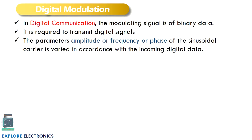In this video we are going to discuss digital communication, meaning the modulation we adopt is digital modulation. In the digital modulation scheme, the input, or message signal, or baseband signal, is a digital signal — binary data, which is a combination of ones and zeros. This binary data is the message signal or baseband signal, and it needs to be modulated before transmission.